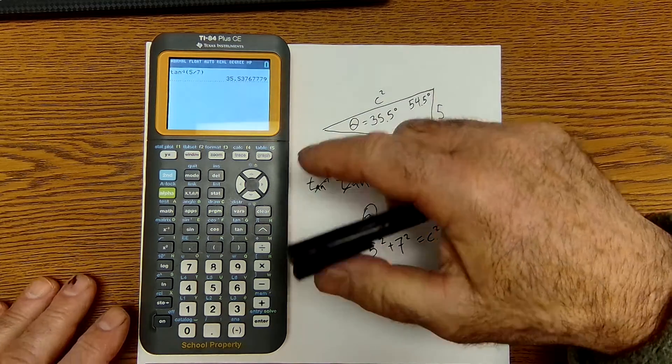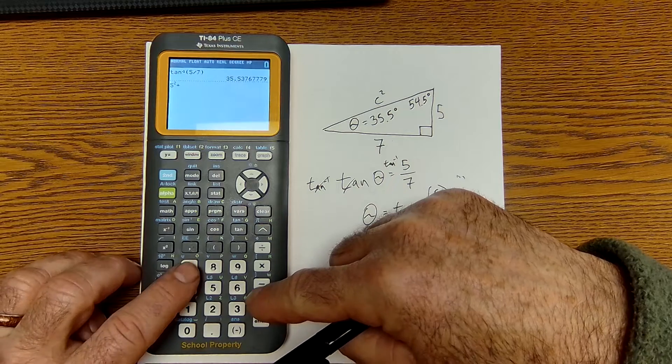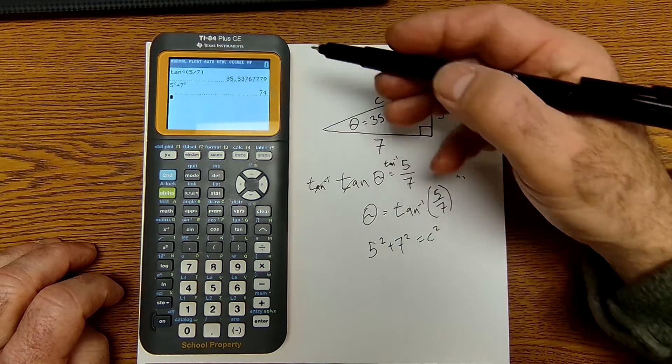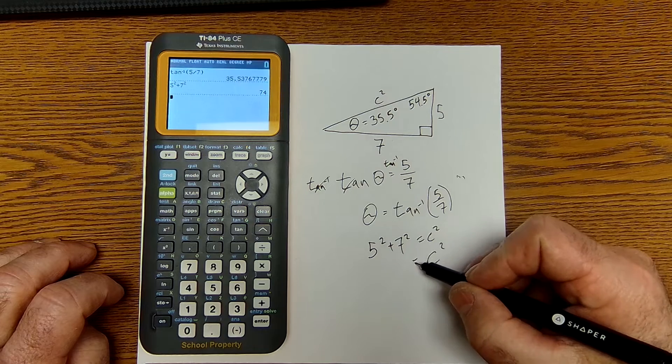So I'm going to go 5 squared plus 7 squared equals 74. C squared is equal to 74.